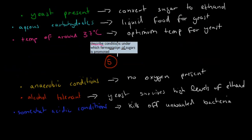Describe conditions under which fermentation of sugar is promoted. We have to have these things present. We have to have yeast present to convert sugar to ethanol. We have to have aqueous carbohydrates because that's liquid food for the actual yeast. We have to have temperatures of around 37 degrees Celsius because that's the optimum temperature for yeast to work at. We need to have anaerobic conditions, that means no oxygen present. We need to have alcohol-tolerant yeast because that means yeast can survive high levels of ethanol and can keep fermenting.